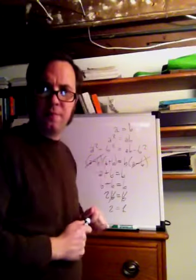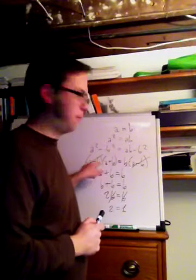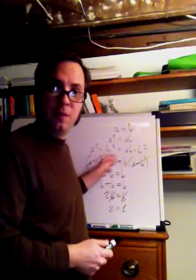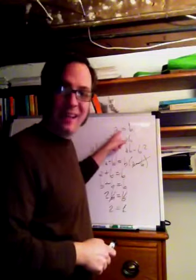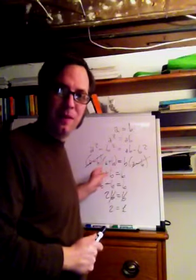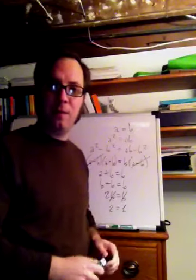But this is the critical step, because at this step, I said that we can divide through by the common term a minus b. The difficulty with that, though, is that a equals b, and so a minus b is zero. Hence, we can't divide by it.